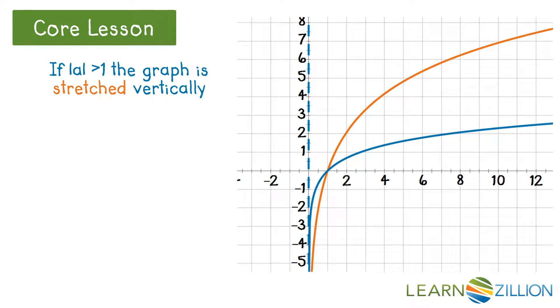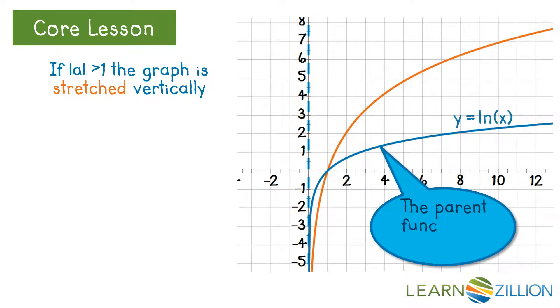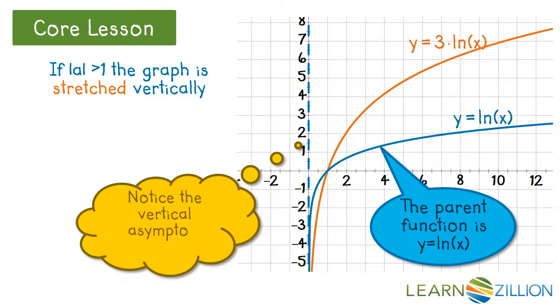Starting with a vertical stretch, we see the parent function is natural log of x. When we multiply the model by 3, each y is 3 times that of the parent function. Notice the vertical asymptote doesn't change.